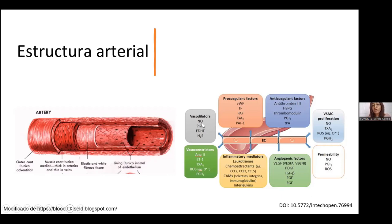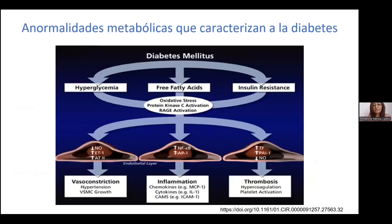Algo muy importante: el óxido nítrico, la prostaciclina y algunos otros. Pero esto es en cuestión fisiológica. En cuestiones fisiopatológicas, que ya nos encontramos en las enfermedades cardiovasculares como la diabetes, la hipertensión, síndrome metabólico y algunas otras, ya tenemos anormalidades metabólicas. Por ejemplo, en la diabetes, la hiperglucemia, los ácidos grasos libres, la resistencia a la insulina que se da previo a que se establezca la diabetes como tal, todo esto lleva a estrés oxidativo, activación de algunas proteínas y activación de procesos inmunológicos.